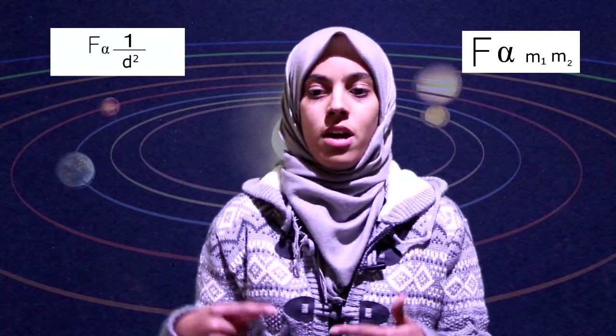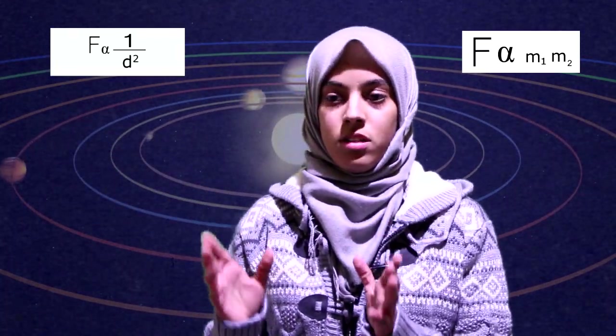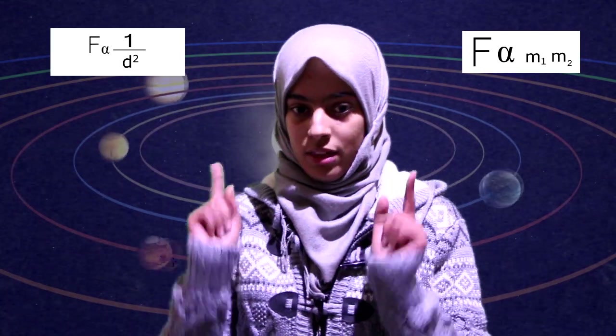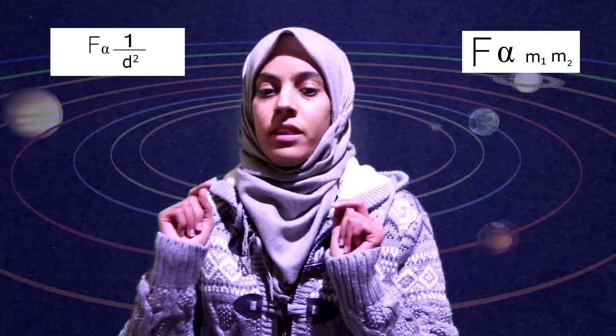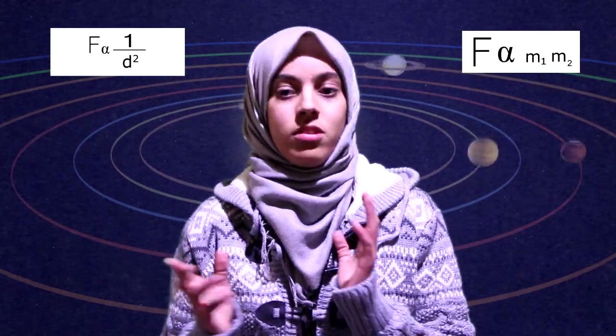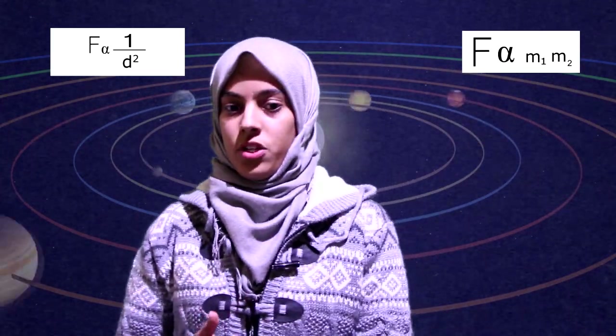The gravitational force is directly proportional to the product of the masses M1 and M2, and inversely proportional to the square of the distance between them. This is the universal law of gravitation.